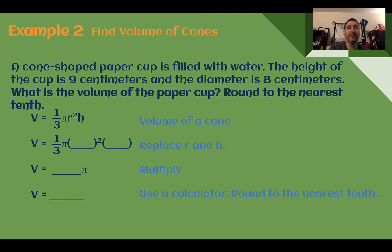Example two, find volume of cones. A cone-shaped paper cup is filled with water. The height of the cup is 9 centimeters and the diameter is 8 centimeters. What is the volume of the paper cup? Round to the nearest tenth. We can start with our volume formula, cylinder divided by three, or one-third pi r squared h.